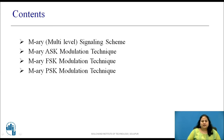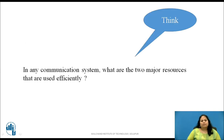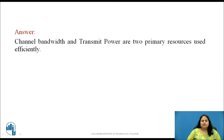These are the contents we will be covering in this session. Before starting with M-Ary signaling scheme, think about what are the two major resources that are used efficiently in any communication system. Well, channel bandwidth and transmit power are two primary resources that are used efficiently in any communication system.